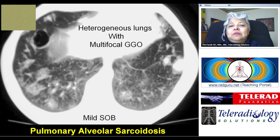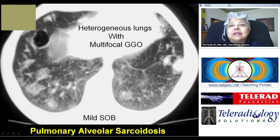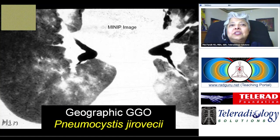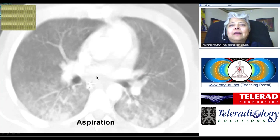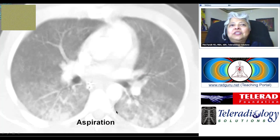A patient of pulmonary alveolar sarcoidosis shows multifocal patchy areas of ground glass opacities, an area of air trapping, and a denser nodule — heterogeneous lungs with multifocal ground glass opacities. A patient of pneumocystis pneumonia has heterogeneous lungs due to ground glass opacities caused by the infection. An example of aspiration gives heterogeneous lungs with denser areas in the dependent lung zones with confluent acinar opacities.